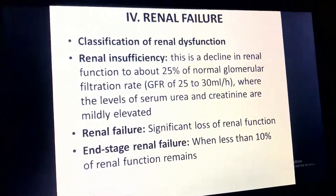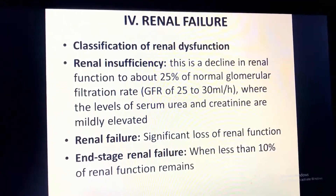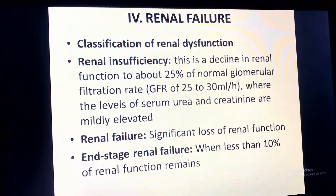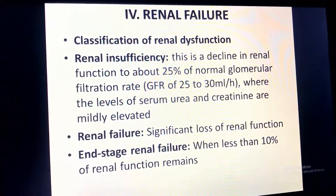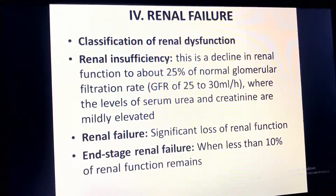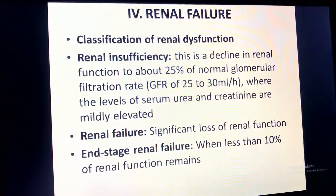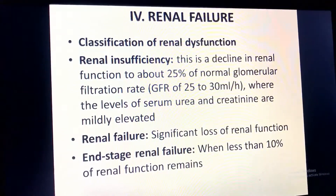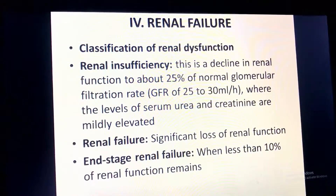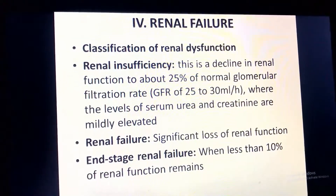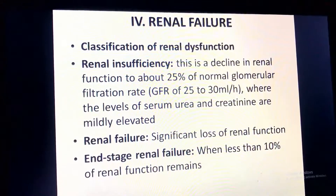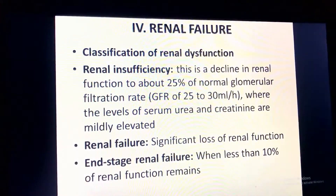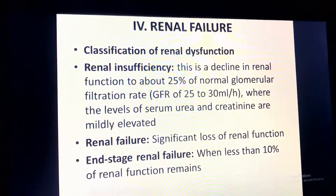The normal glomerular filtration rate is about 25 to 30 mL per hour. For an adult, we calculate it as 0.5 mL times body weight in kg per hour. For a child, we calculate by 1 mL per kg per hour. In renal insufficiency, serum urea and creatinine levels are immediately elevated.